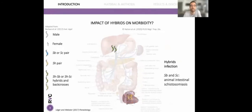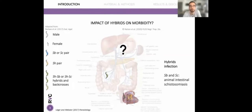For hybrids, a similar process could be expected because of the hybridization between the human urogenital haematobium and the animal intestinal Schistosoma bovis. It's more difficult to predict the direction because hybridization is bidirectional, but we nonetheless expect a differential morbidity profile for hybrid infections.